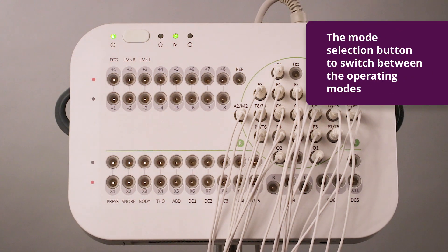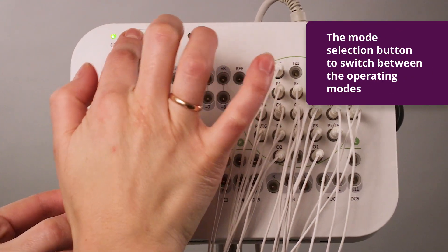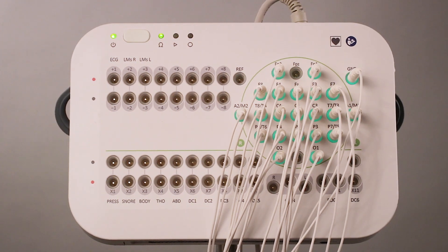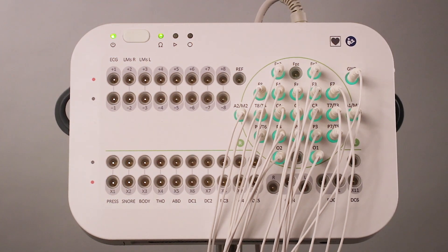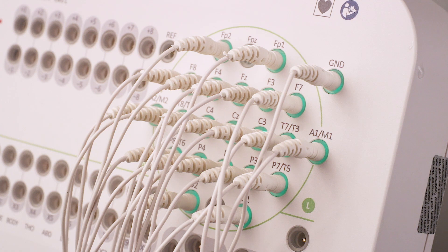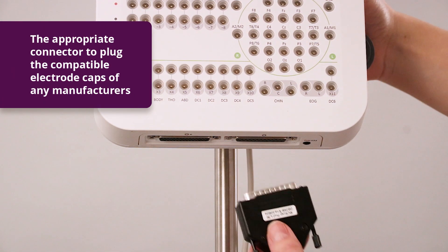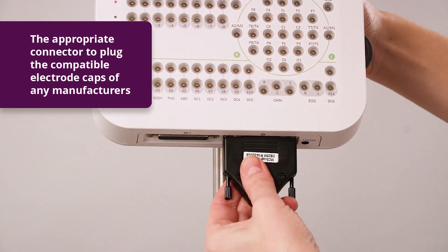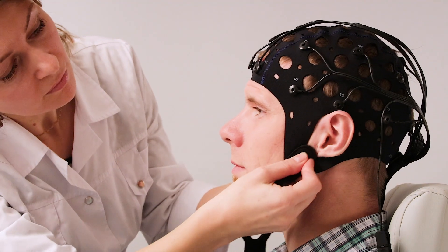You can also change the mode using just one button on the front panel of the device. A special indicator will show if the device is in acquisition mode or impedance measurement mode. The appropriate connector is used to plug the compatible electrode caps of the manufacturer.